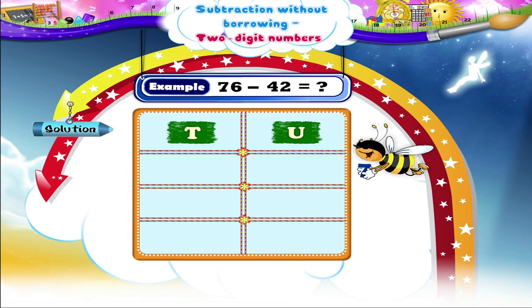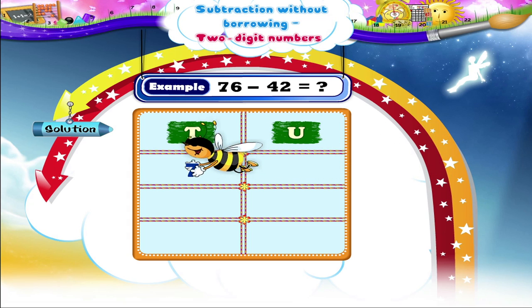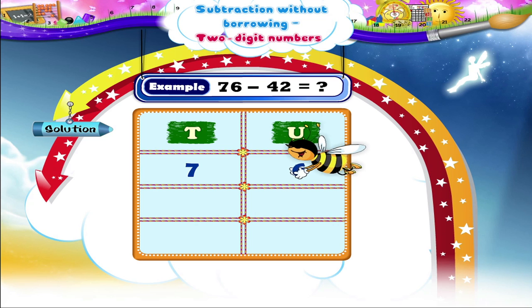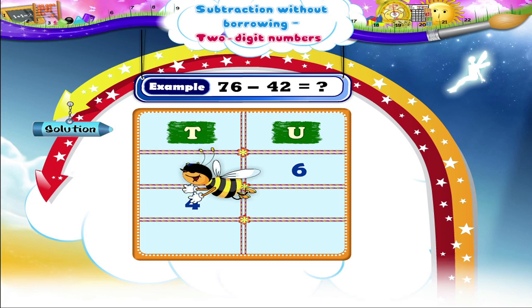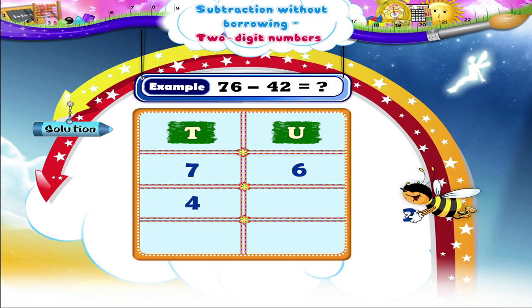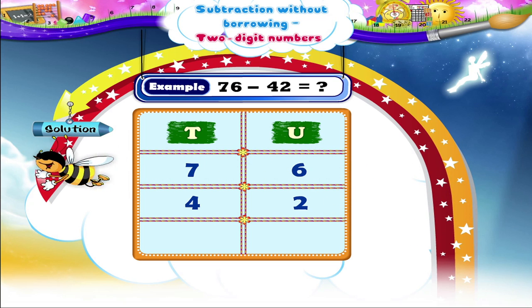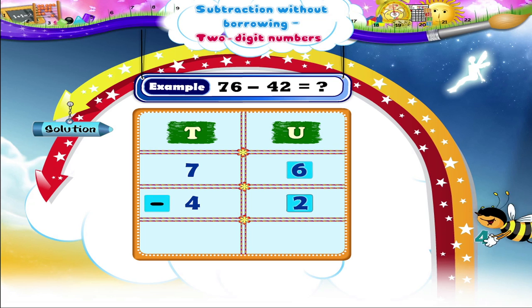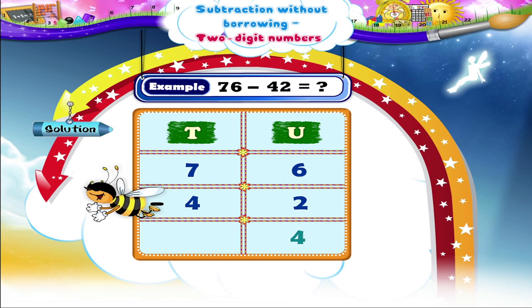Yes, we shall write 7 in the tens column and 6 in the units column. Then, we shall write the digit 4 in the tens column below 7 and 2 below 6 in the units column. Now, let us do the subtraction. First, we shall subtract the digits in the units place. 6 minus 2 is 4. Write 4 in the units place of the answer.